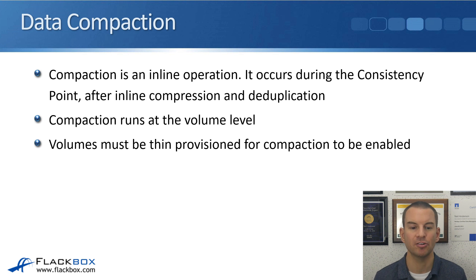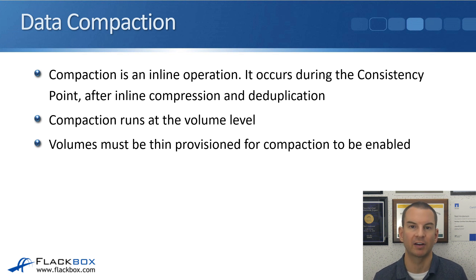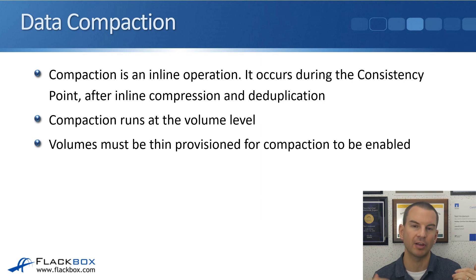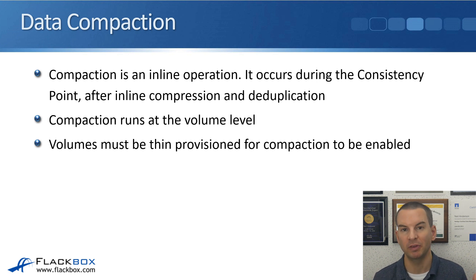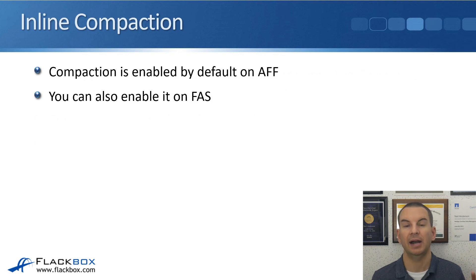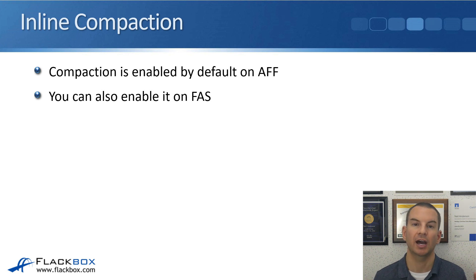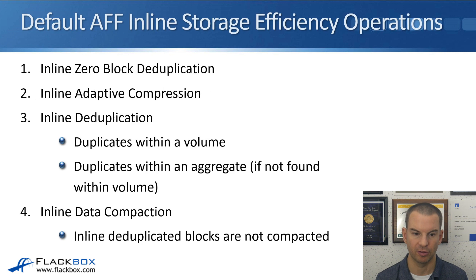Finally, compaction. Compaction is an inline-only operation — there is no post-process for that. It occurs during the consistency point after inline compression and deduplication, just as the data is about to be written to disk. Compaction runs at the volume level, and volumes must be thin provisioned for compaction to be enabled. Compaction is enabled by default on AFF, and you can also enable it on FAS systems.